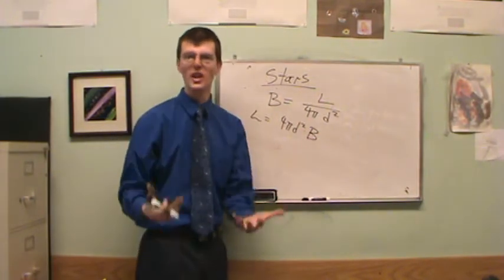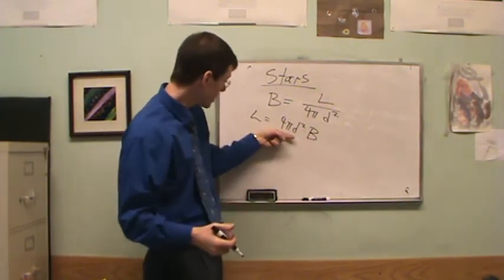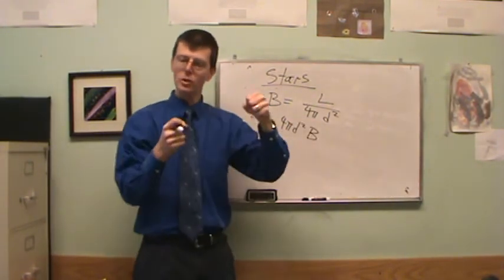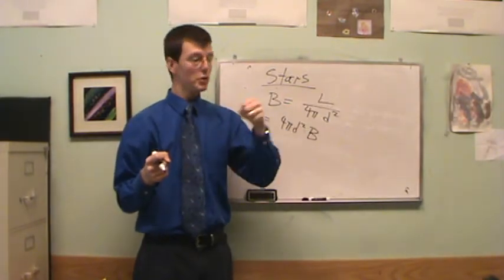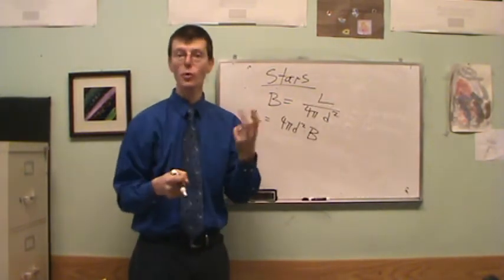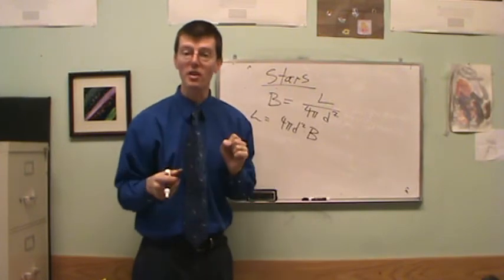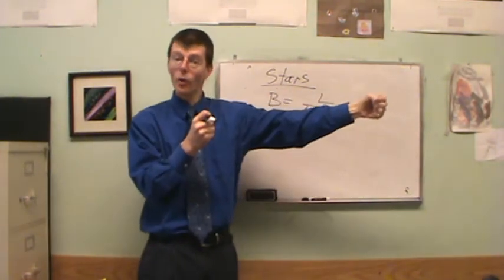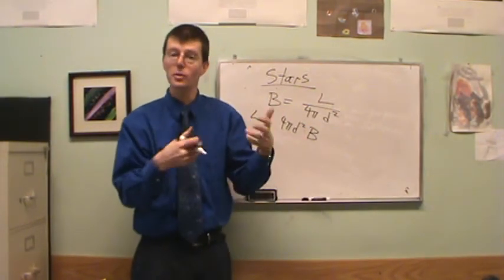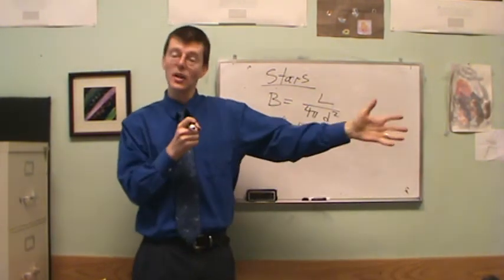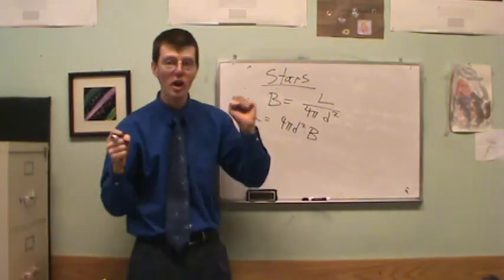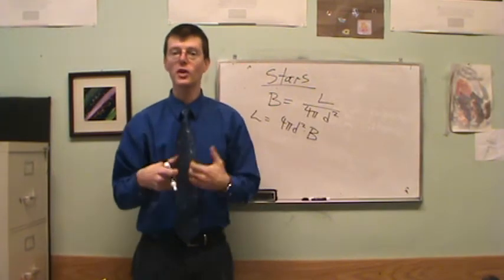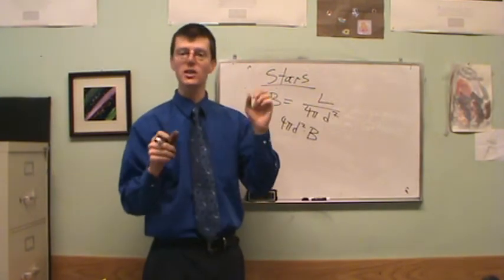This allows me to really compare stars. Brightness is related to distance squared. If I took a star and moved it so it was twice as far away, 2 squared is 4, so it would be one-fourth as bright. Three times as far away: 3 squared is 9, so one-ninth as bright. Four times as far away: 4 squared is 16, so one-sixteenth as bright.